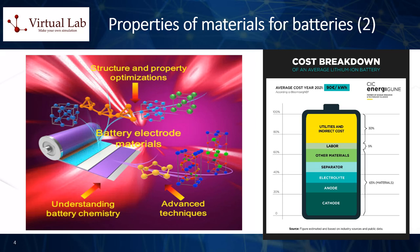Fifth, charge transfer resistance: this property measures how easily ions can move from the electrolyte to the electrode. Lower charge transfer resistance allows for better performance. Sixth, cycling stability: this refers to how well a battery can maintain its capacity over multiple charge and discharge cycles. Materials that exhibit good cycling stability lead to batteries with longer lifetimes.